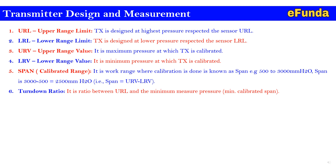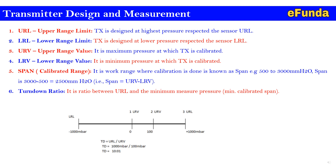Turndown ratio is the ratio between URL (Upper Range Limit) and the minimum calibrated span. One can refer to the sketch where LRL is minus 1000 millibar, LRV is 0, URV is 100 millibar, and URL is plus 1000 millibar. The turndown ratio is calculated as URL divided by URV.